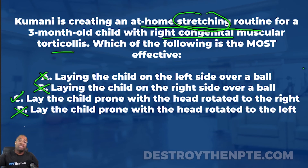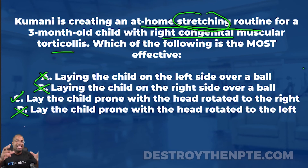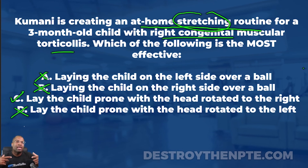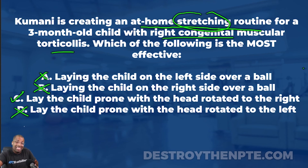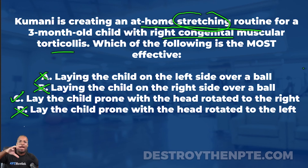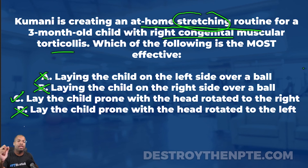The answer is C — lay the child prone with the head rotated to the right. I cannot stress this enough: you have to understand muscular torticollis. I've seen so many questions come up where they word it a little differently and you get mixed up — that happened to me so many times on exams. They switch a word and suddenly you're unsure whether the head goes right or left. The way to fix that is to get more practice with torticollis, make sure you know exactly what the SCM does, and look at it from all different angles. That way, when the NPTE throws a curveball, you're ready. Congenital muscular torticollis is a major area that comes up, and it's definitely beneficial to know it.